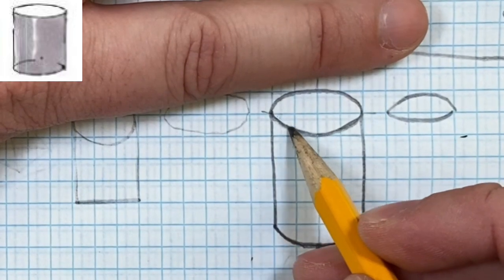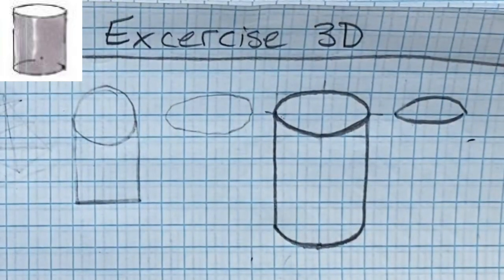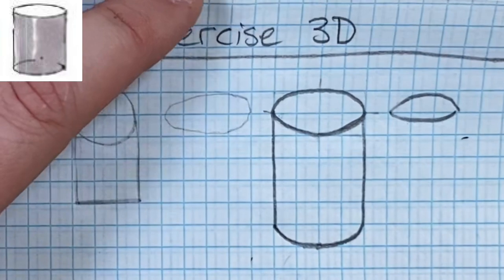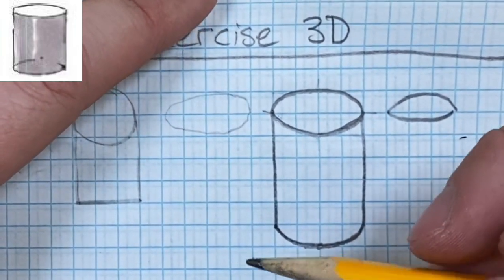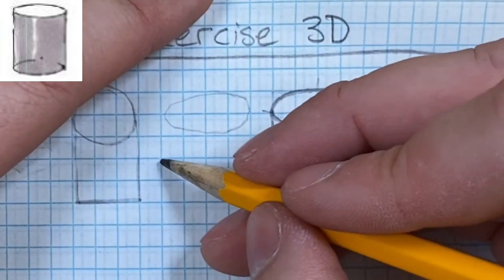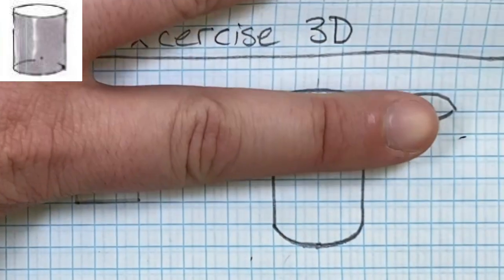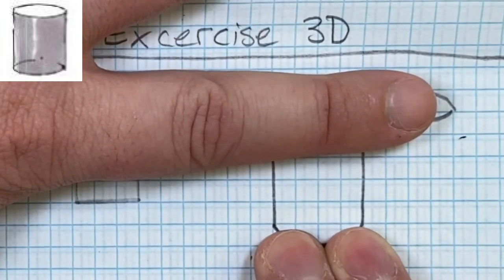Now for the shading part, to do an oval, I'm going to do it a little bit differently than the example I gave you. But I'm going to show you something called gradation. Now if you look at the side of this, think of it like a rectangle.